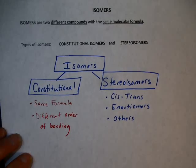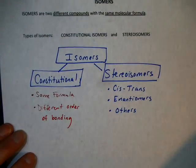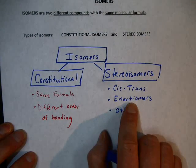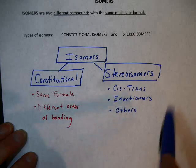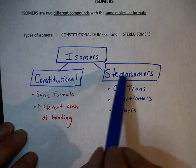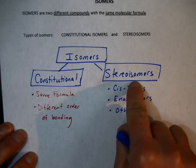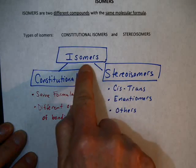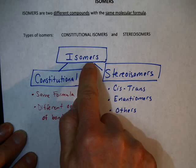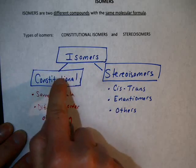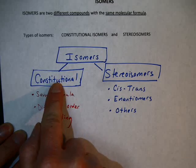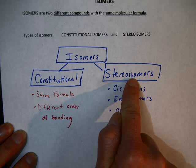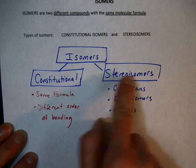Let's take a look at enantiomers. Enantiomers are a type of stereoisomer. We've been talking about isomers — there are two categories of isomers: constitutional isomers and stereoisomers.